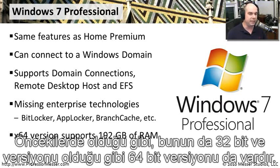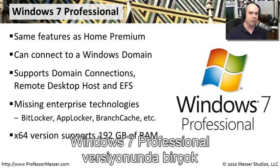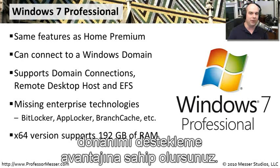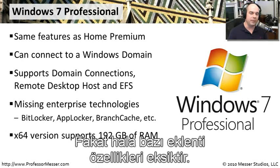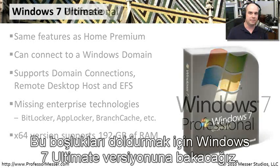Windows 7 Professional supports both 32-bit and 64-bit versions, and you can have up to 192 GB of RAM. That allows you to take advantage of a lot of hardware, but there are still some missing features that Windows 7 Ultimate would fill in.